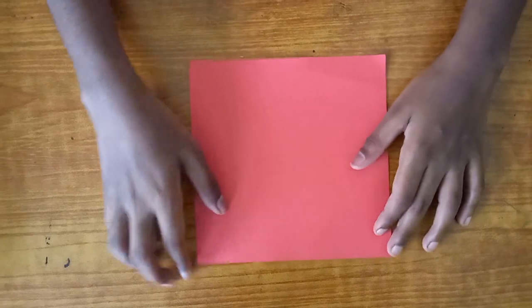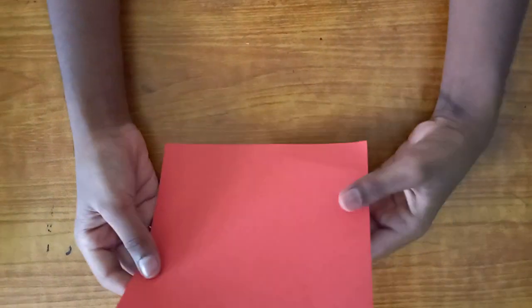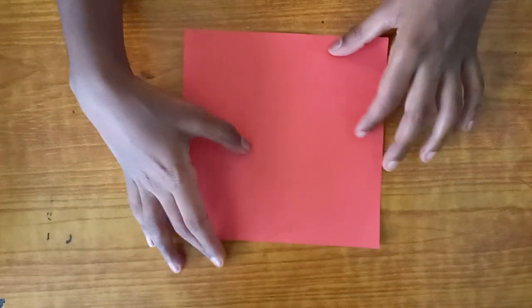Hi guys, welcome back to Fun Time. Today I'll be teaching you how to fold an origami dragon. Let's start. For this origami you'll be needing a square paper. I'll use red, you can use any color you want.